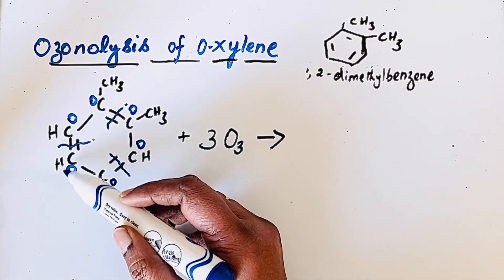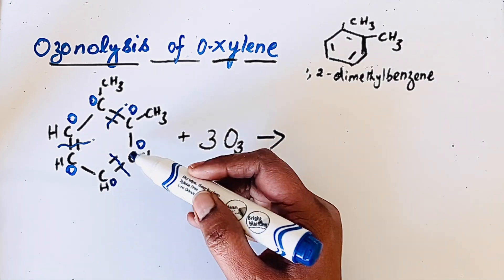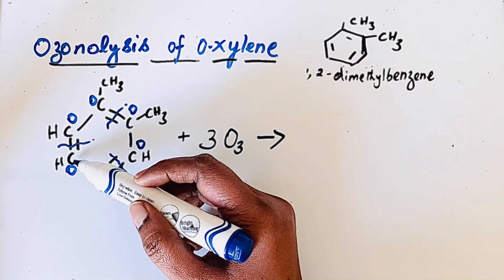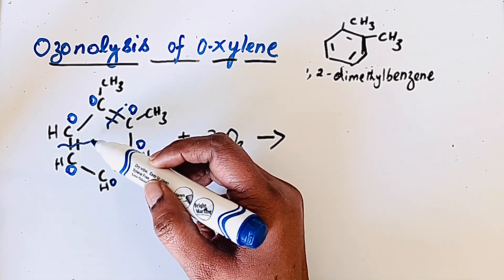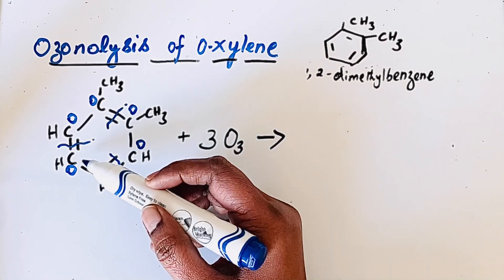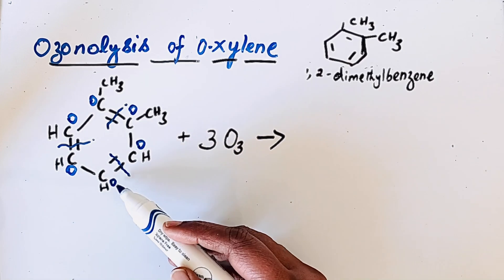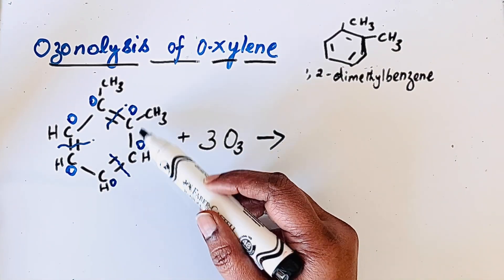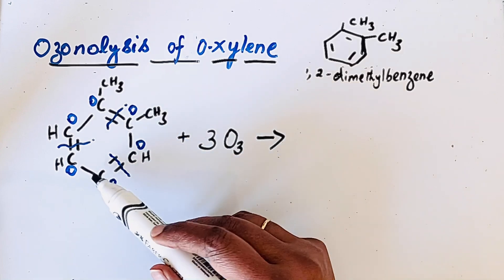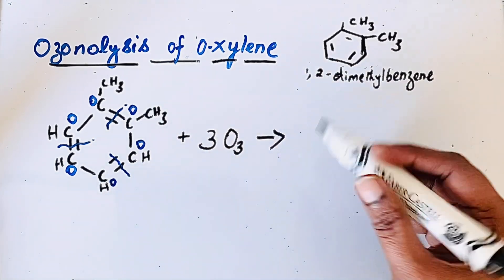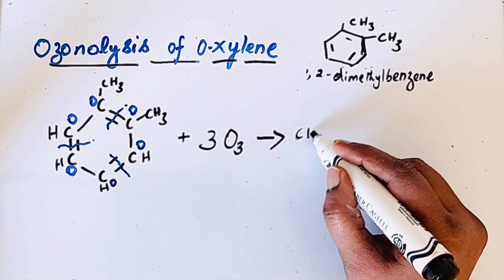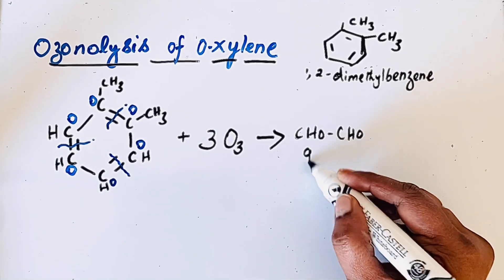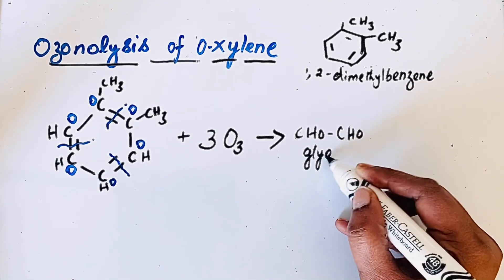Now you will get an idea of what products we obtain. Because of the cleavage, we get three simpler molecules. One molecule has CHO and CHO — that is, OHC-CHO — which is glyoxal. So one molecule of glyoxal is produced.